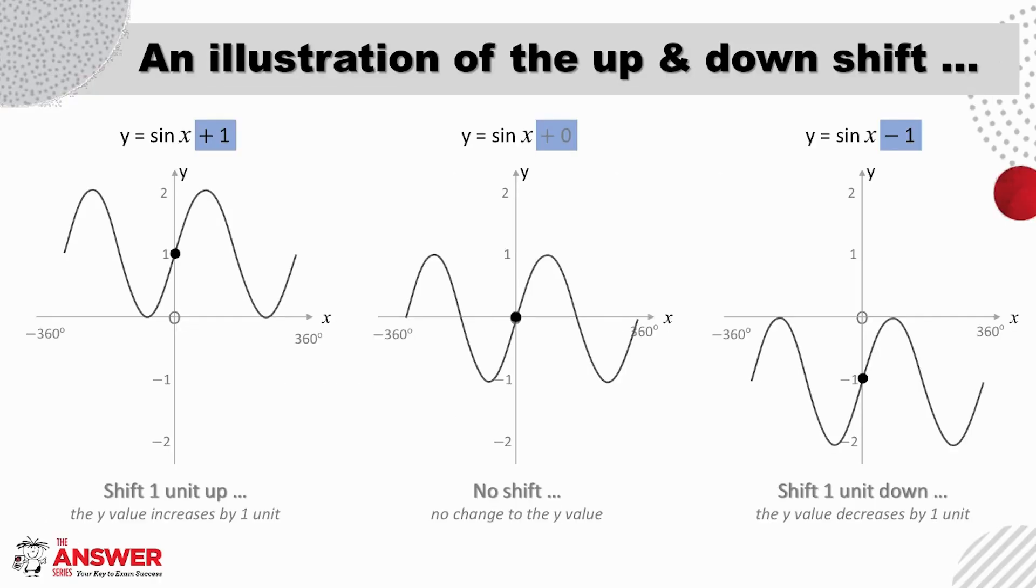Let's go on now to see what this looks like. As you can see from these graphs, the standard sine graph moves up one unit as a whole when one is added to the equation, and the entire graph moves or shifts down one unit when one is subtracted from the equation.